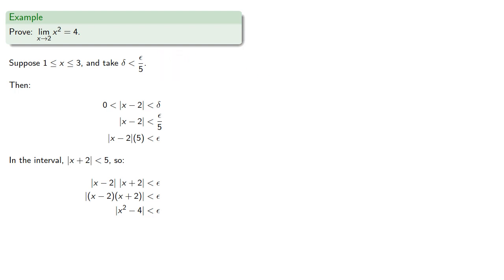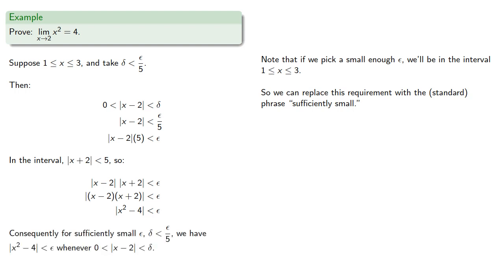Now, we typically make one last simplification. Note that if we pick a small enough epsilon, we'll be in this interval between 1 and 3. So we can replace this requirement with the fairly standard phrase, sufficiently small, and say that for sufficiently small epsilon and delta less than epsilon fifths, we have absolute x squared minus 4 less than epsilon whenever x minus 2 is between 0 and delta. And that completes our proof.